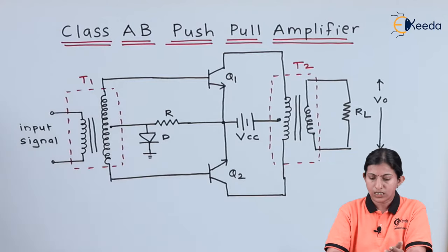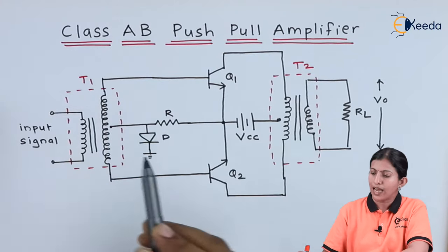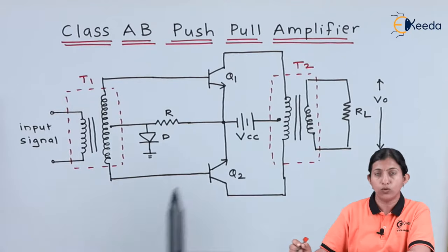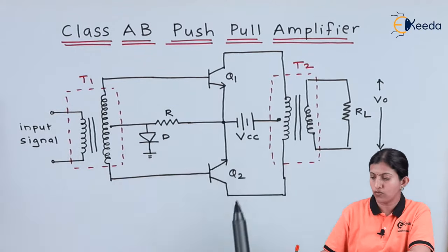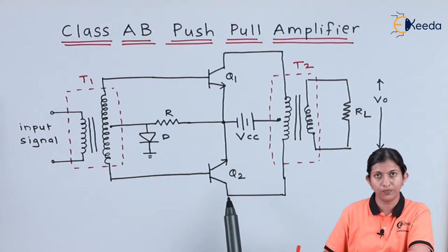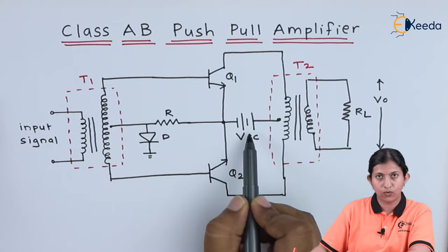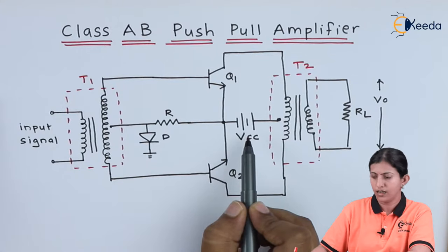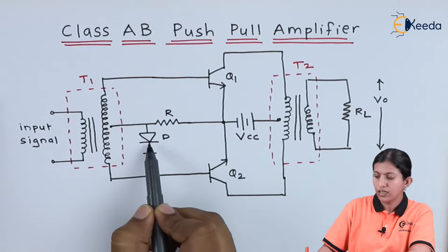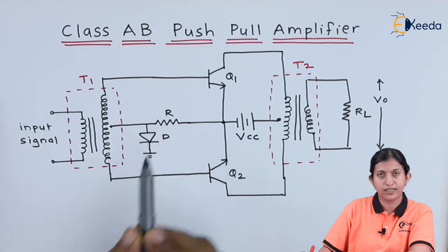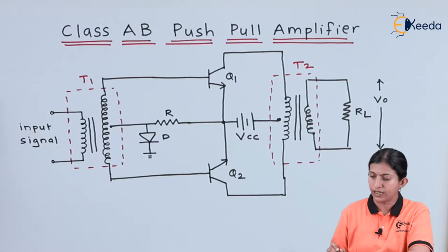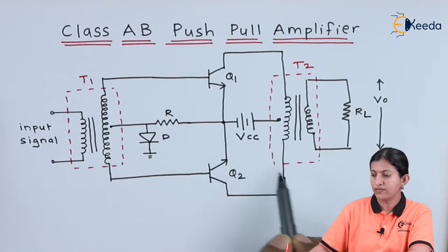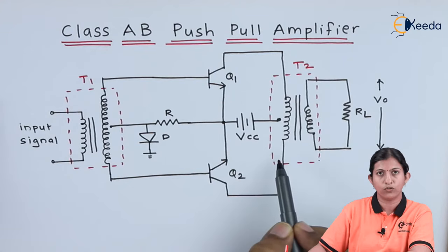This is the diagram for class AB push-pull amplifier. It consists of two transistors, transistor Q1 and transistor Q2. We apply the VCC voltage which biases the transistors, and we are using one diode and resistor. In this circuit diagram we are using a transformer at the input as well as a transformer at the output.